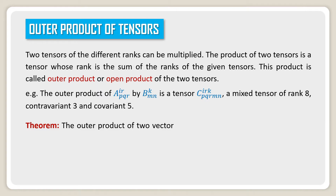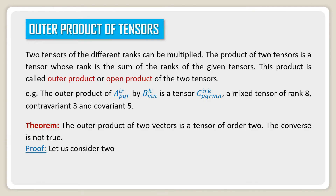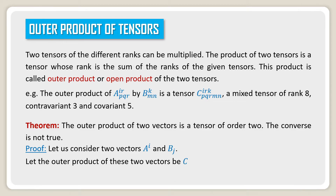Theorem: The outer product of two vectors is a tensor of order 2. The converse is not true. Let us consider two vectors A^i and B^j. Let the outer product of these two vectors be C_ij, that is, C_ij = A^i B^j. Say this is equation number 1.